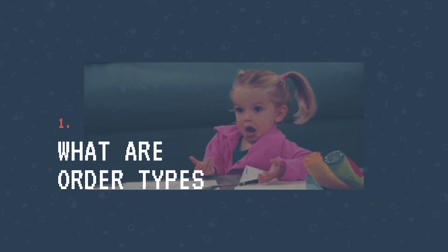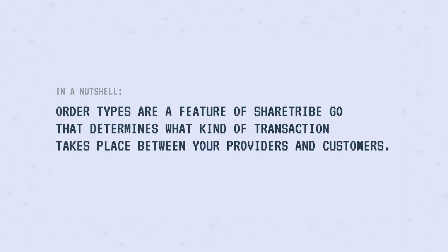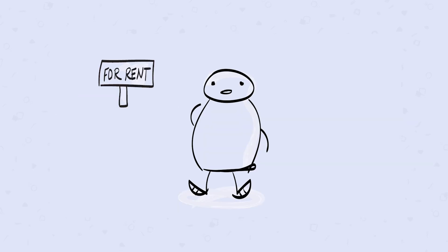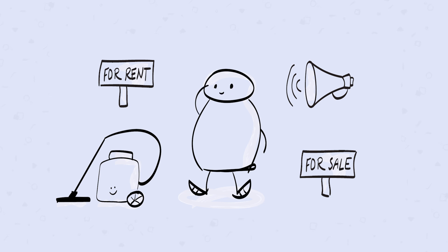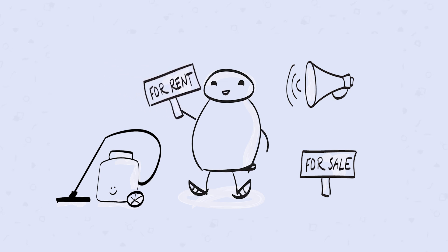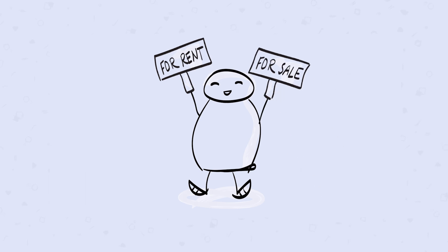What are order types, exactly? Order types are a feature of Sharetype Go that determines what kind of transaction takes place between your providers and customers. Is your marketplace about renting something or selling something? Or perhaps your marketplace is about offering services? Or maybe it's for posting announcements? This is where order types come in. In Sharetype Go, you have a number of setting options to create the order type you need to facilitate the kind of transactions your marketplace is for. You can also have many order types in the same marketplace.